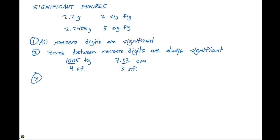Rule number three: zeros at the beginning of a number are never significant. Some examples of this are 0.0026 cm. Here we have two significant figures because these zeros right here are not significant. The significant figures that we have here are the two and the six.